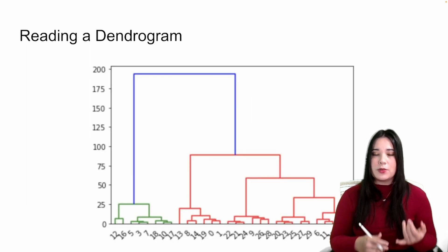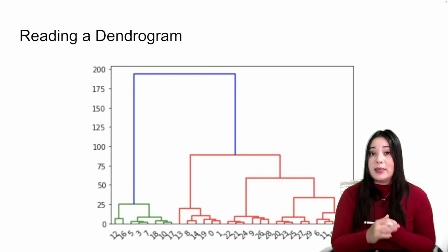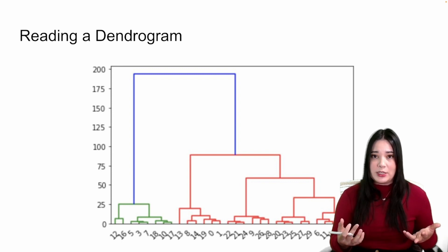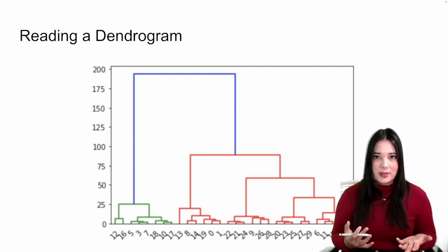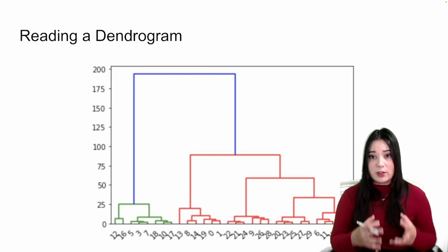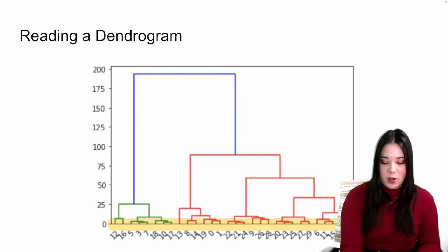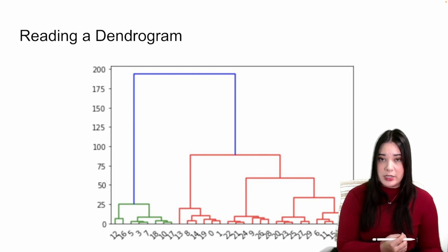So now we've discussed how to choose a distance metric, which measures the distance between two individual points, and a linkage criteria, which helps you measure the distance between two clusters. So now we know everything we need to know to actually create a hierarchical clustering algorithm. When we've done so, we create a tree structure called a dendrogram. This helps us visualize the relationship between all of our clusters. Remember, in agglomerative clustering, every data point starts off as its own cluster, and then we merge successively until all data points are in the same cluster. And a dendrogram helps us visualize these merges.